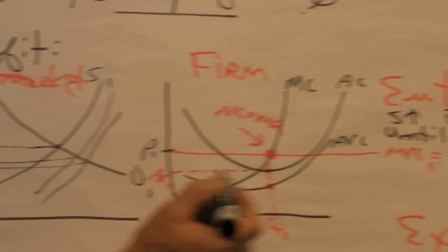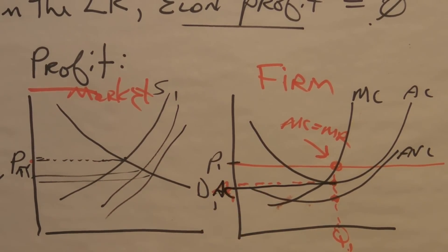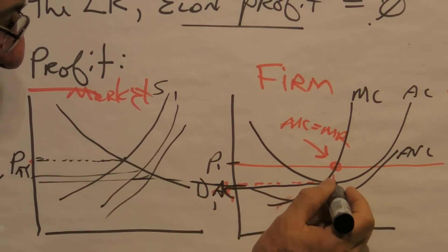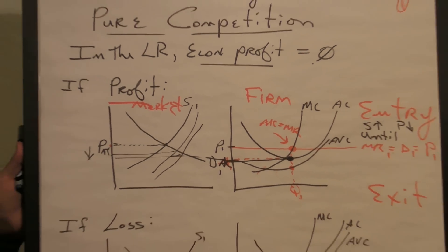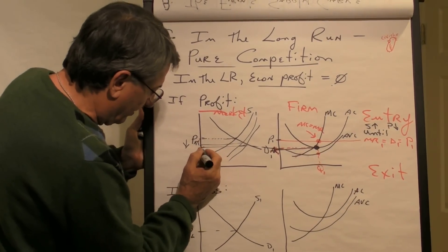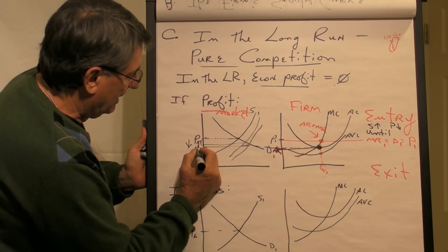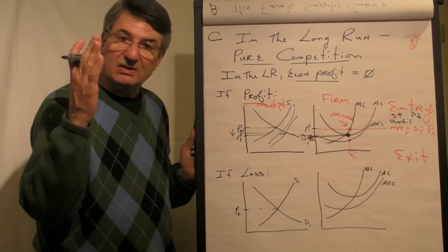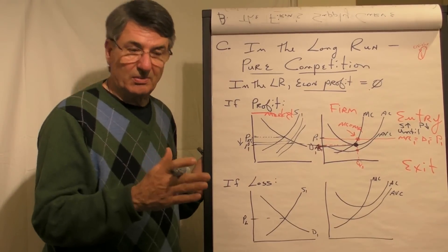Until the price goes down to where the price equals the average cost—the minimum point of average cost. When the price equals the minimum point of average cost here, there is no more incentive for firms to enter because there are no more economic profits to be gained from doing it. So the entry stops. And this then is long run equilibrium in a purely competitive industry where the price, P1 here, is equal to the minimum point of the typical firm's average cost curve. And generally speaking, firms are not making economic profits, only normal profits.